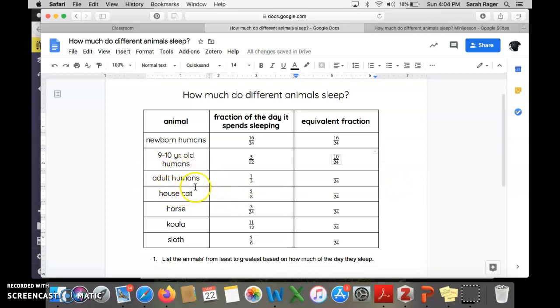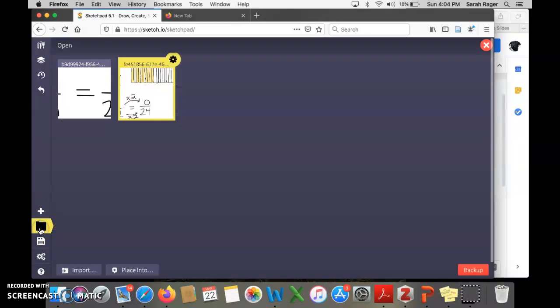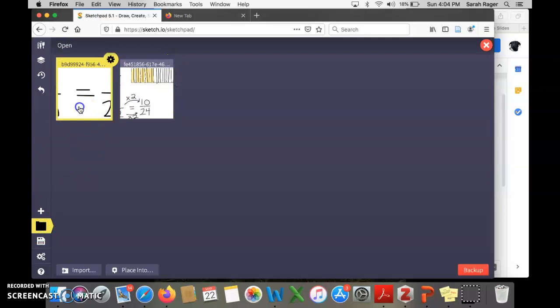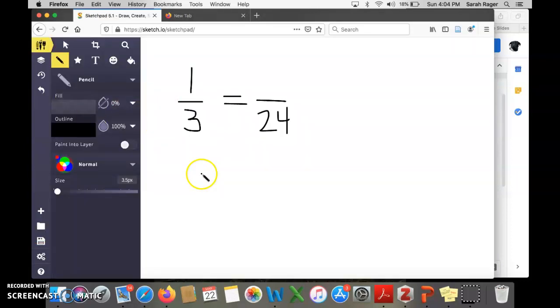Adult humans should sleep one-third of the day. For us to see how many hours that is, we're going to need to create a denominator that shows 24 hours in a whole day. This time, I'm going to skip straight to the multiplication strategy.